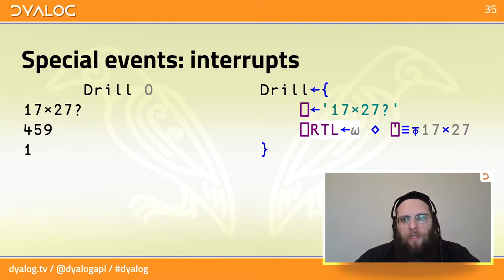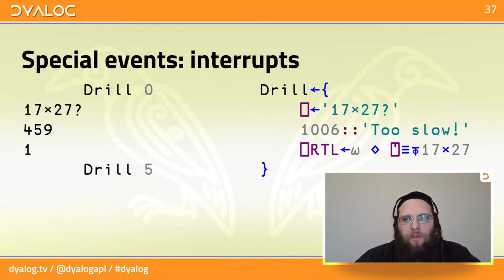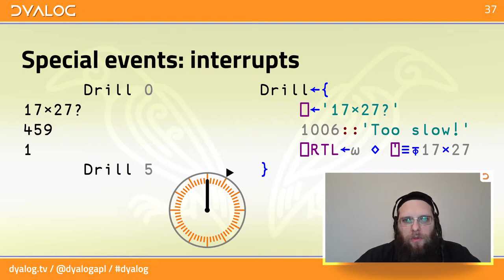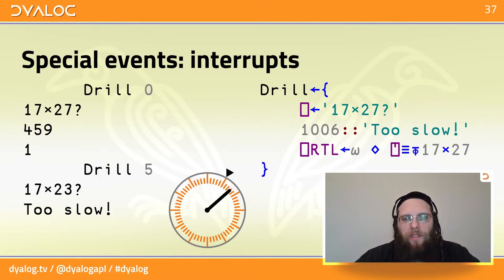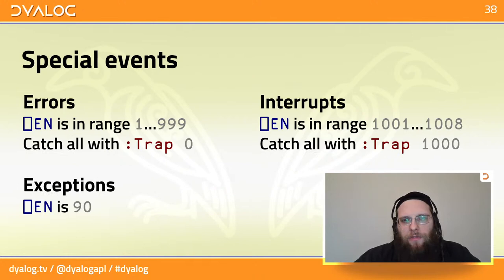If input comes within the allotted time, QuoteQuad acts normally. If not, the timeout interrupt triggers — event number 1006 — which we can trap. We insert a guard: 1006, timeout, and return the value 'too slow' rather than 1 or 0. We give the user 5 seconds, run it, and after exactly 5 seconds: 'too slow'. This shows how interrupts can be used not just for external events but as part of your function's flow.